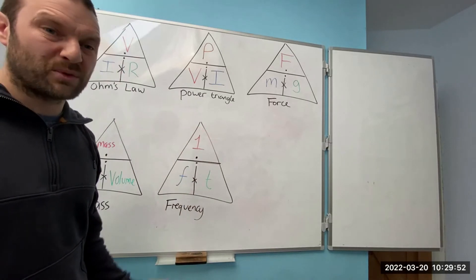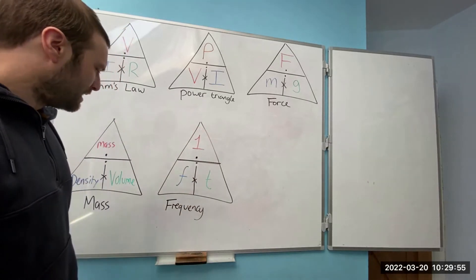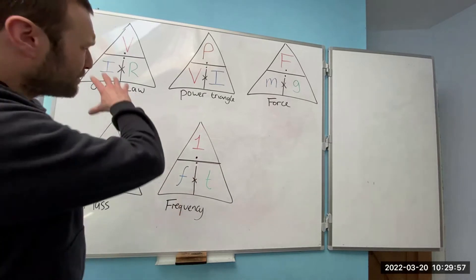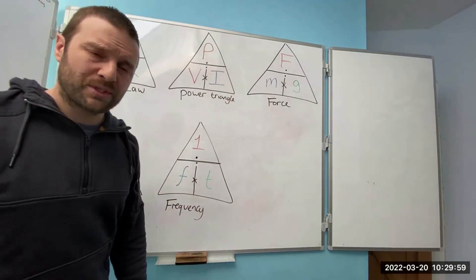Okay, equals one. Effectively, that equals what you're looking for. So those are just some simple triangles for you to remember for your City and Guilds exams.